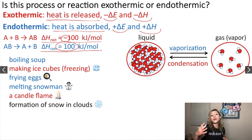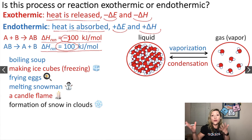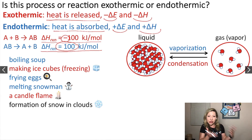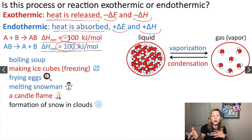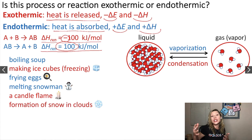How about formation of snow in clouds? This is the same as freezing — you go from a liquid to snow, water vapor into snow. So again we are going to have a process which is exothermic.